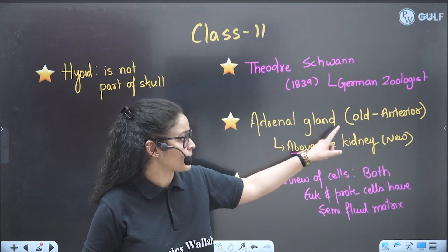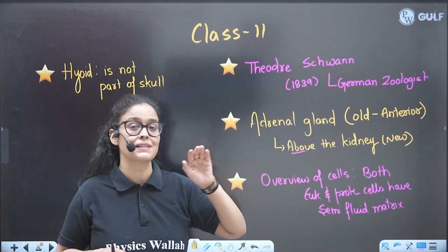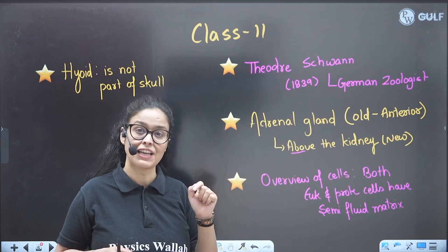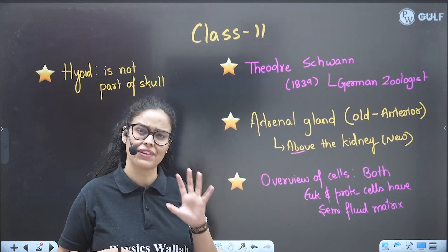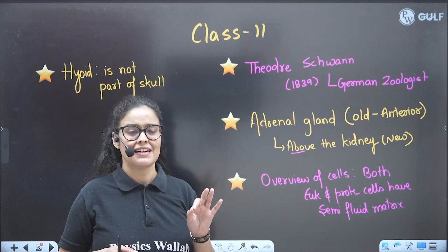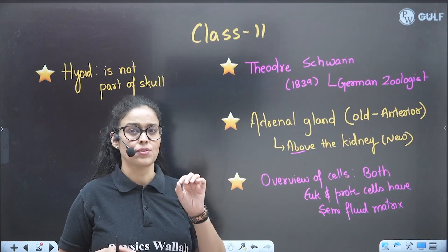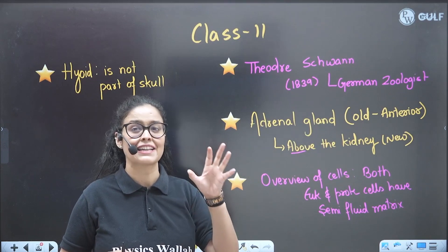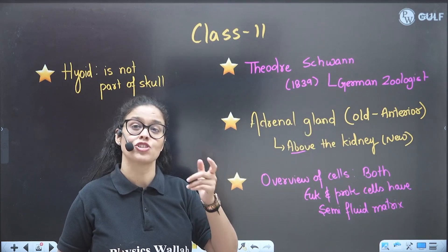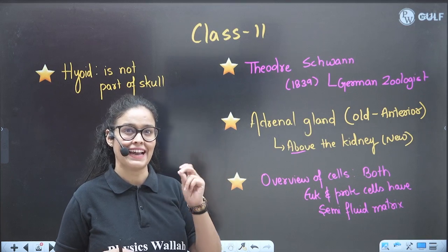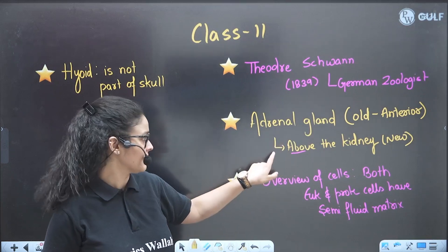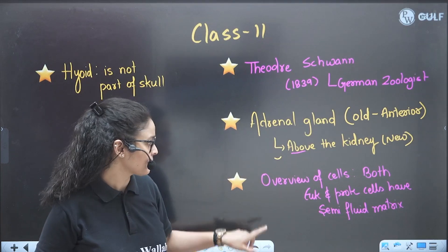Next, the adrenal gland as per old NCRT is present anterior to the kidney, but now they have changed it. Even in class we always teach that the adrenal gland is the suprarenal gland, meaning present just above the kidney — and now in new NCRT it says above the kidney.